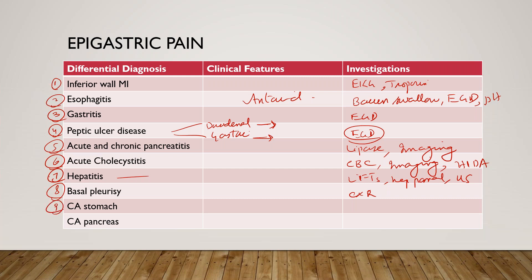Ninth is cancer of the stomach. It can cause epigastric pain or a feeling of distension after meals, loss of appetite, nausea after eating, early satiety, and weight loss. Workup-wise, you can do a CBC, which can show anemia, and EGD with biopsy should be considered.